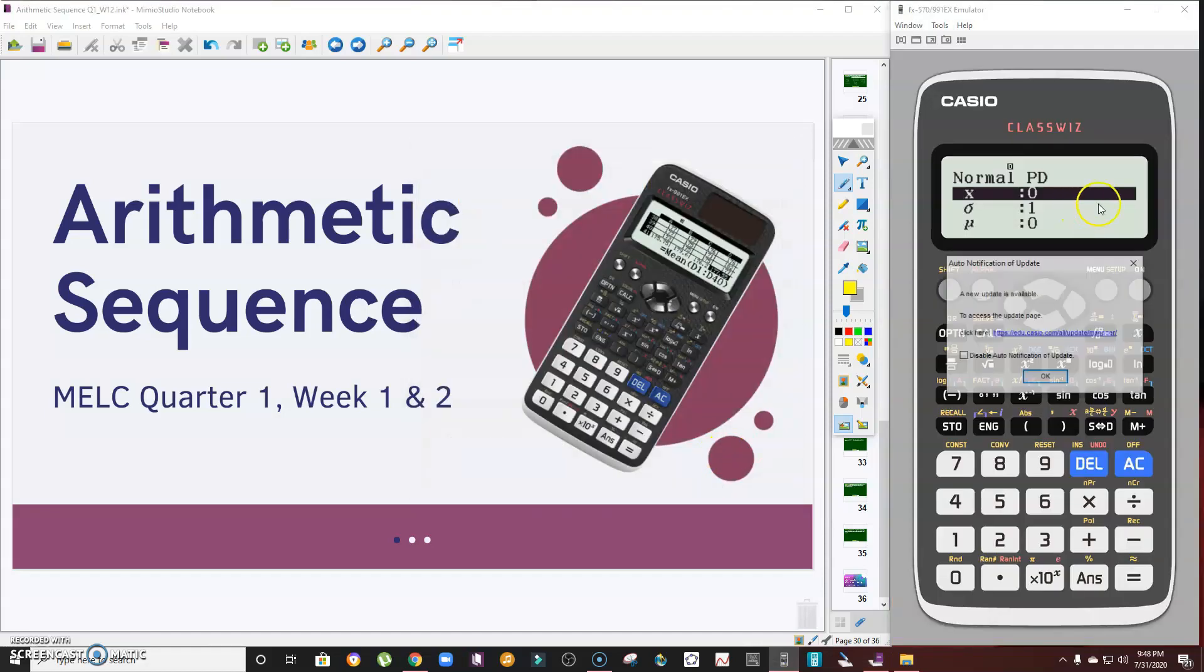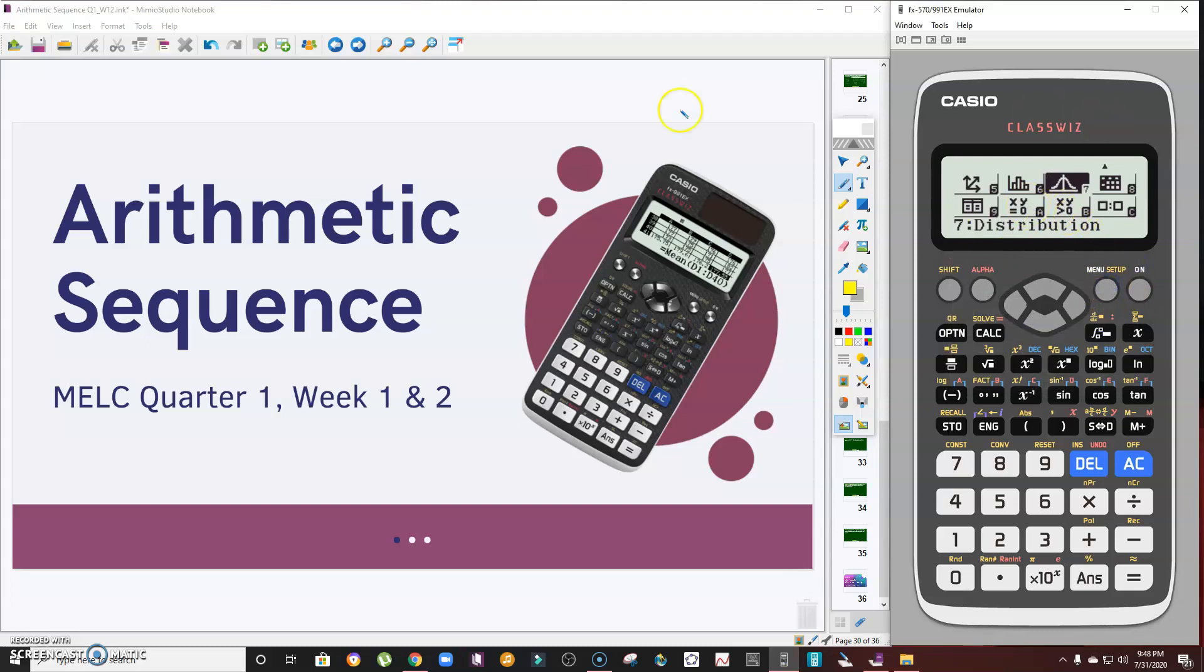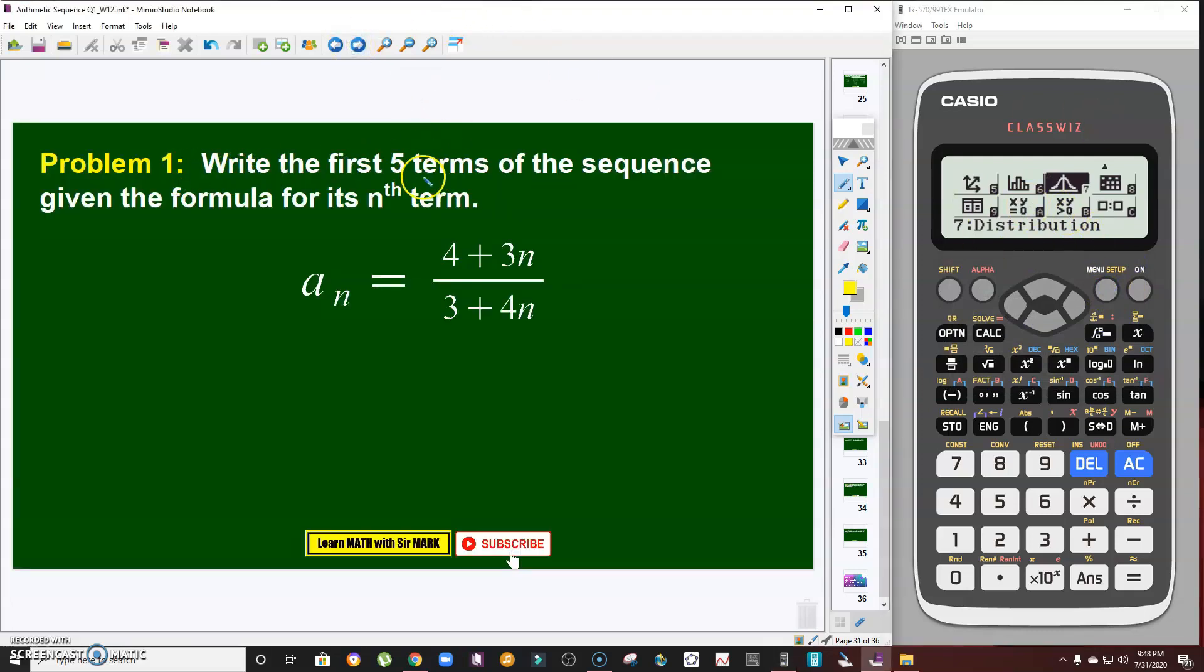This is my emulator. Problem number one, as I said earlier, I've discussed this in one of my videos. How to solve this one using your calculator? The problem says: write the first five terms of the sequence given the formula for its nth term: a_n equals (4 + 3n)/(3 + 4n). On your calculator, press the navigation button to go to table mode. Once you see it highlighted, press execute or enter.